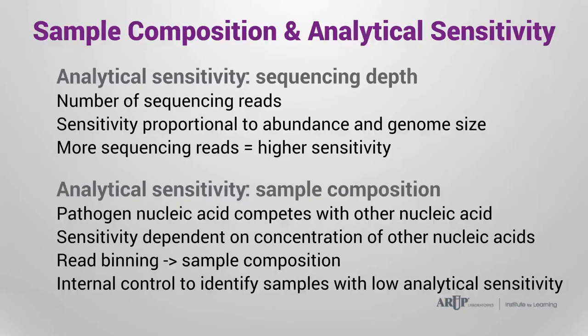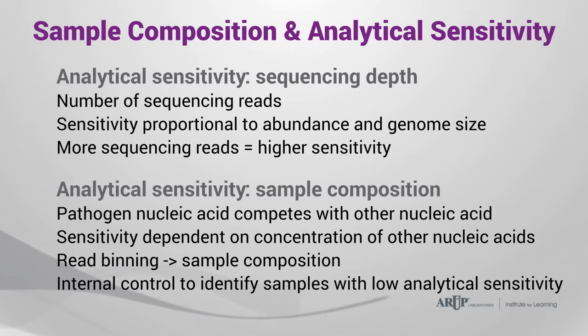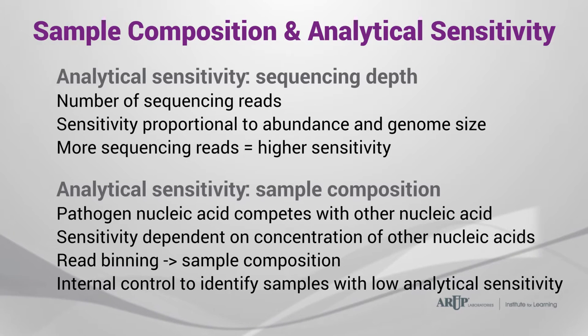One complication of metagenomics-based tests is that it is difficult to measure their analytical sensitivity. The sensitivity depends on three main variables: the number of sequencing reads generated — also called the sequencing depth — the genome size of the targeted organism, and the sample composition. The more sequences generated from the samples and the larger the genome size of the target organism, the more reads will be generated. While these two variables can be controlled or known, the third variable, the sample composition, cannot be controlled and may differ significantly between samples. As a pathogen's nucleic acid competes during library preparation and sequencing with nucleic acid from the patient and the normal flora, analytical sensitivity can differ between two samples with the same organism load but different composition.